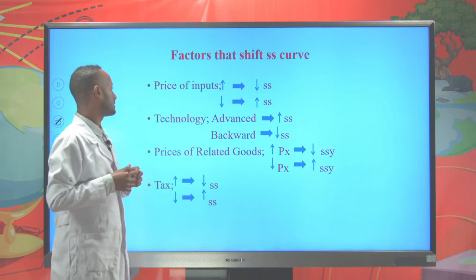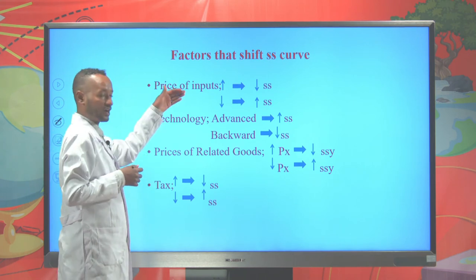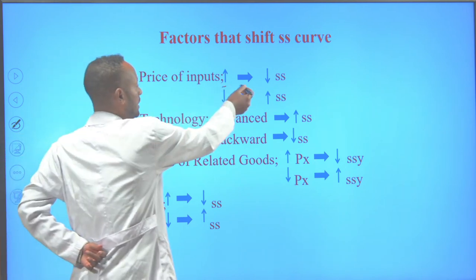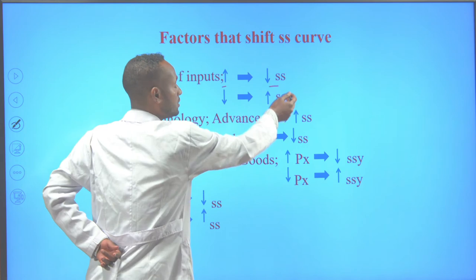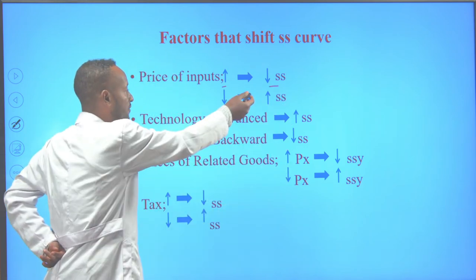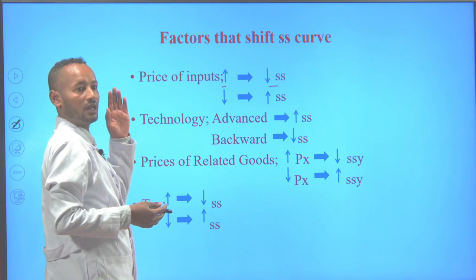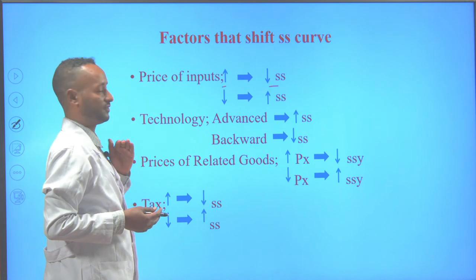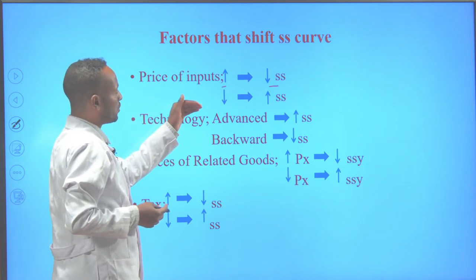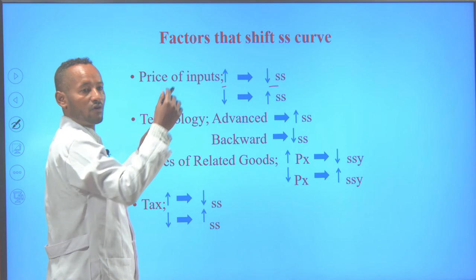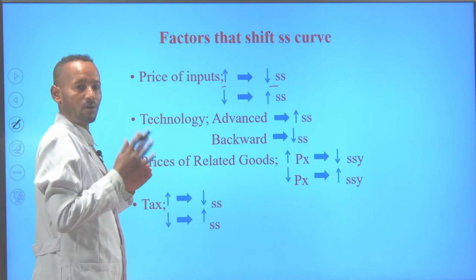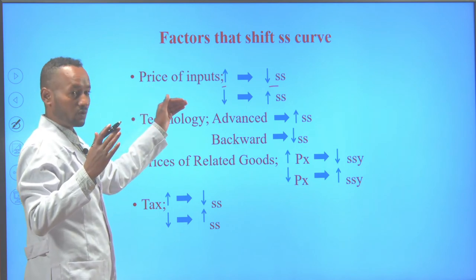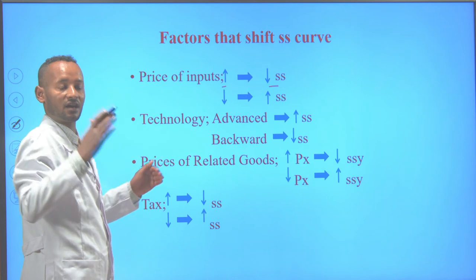The first factor is price of input or cost of production. As the cost of production or the price of inputs increases, then the supply for the commodity will decline, and any factor that declines supply shifts the supply curve to the left. In other words, increasing price of inputs shifts the supply curve to the left. Conversely, a decline in price of inputs or cost of production increases supply and shifts the supply curve to the right.